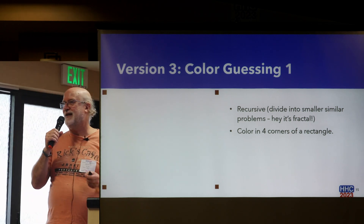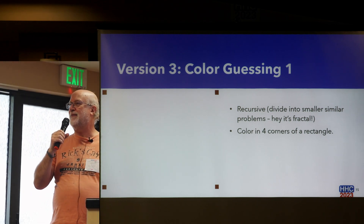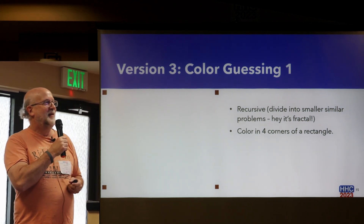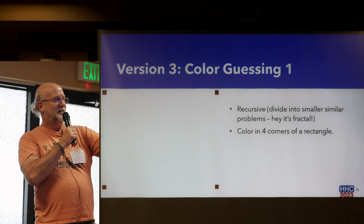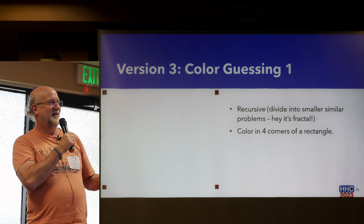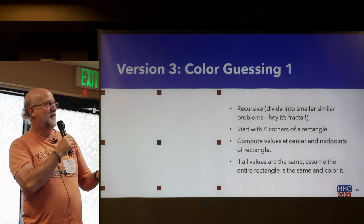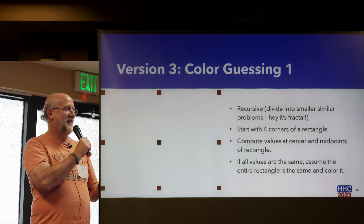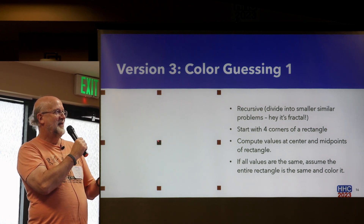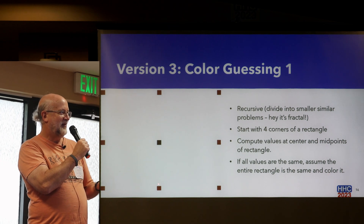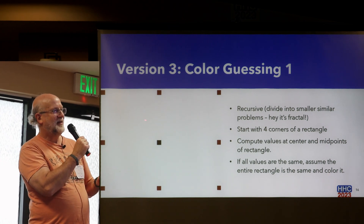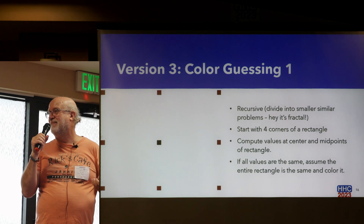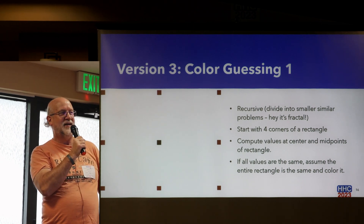The color guessing algorithm is recursive — you divide it into smaller and smaller problems that look the same. Kind of like a fractal approach. I start with four corners of a rectangle and compute the potential for those. Then I compute the potential for additional points: north, south, east, west, and central. If those values are all the same, I fill in the interior and I'm done — no need to compute everything inside.